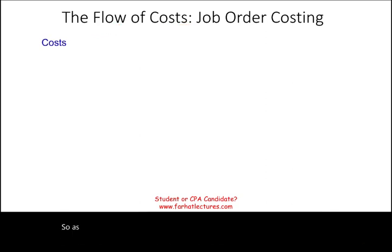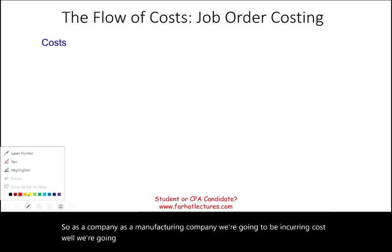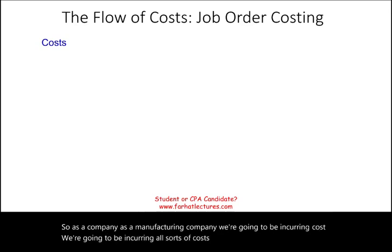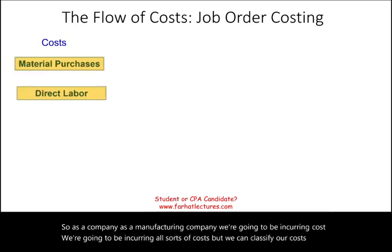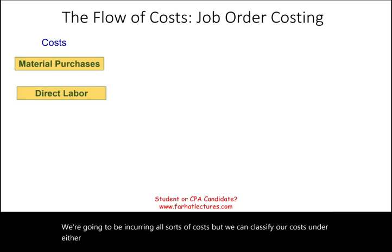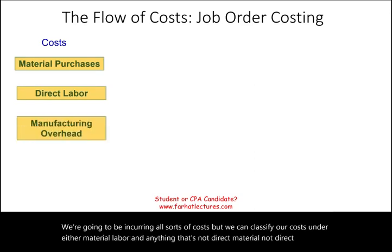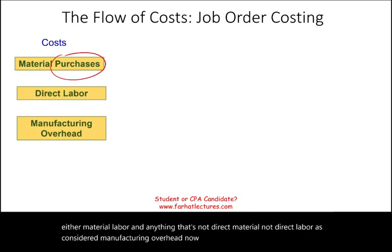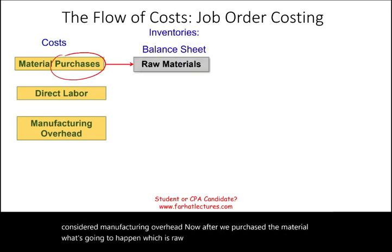As a manufacturing company, we're going to be incurring all sorts of costs, but we can classify our costs under either material, labor, and anything that's not direct material and not direct labor is considered manufacturing overhead. After we purchase the material — which is raw material — the raw material is considered inventory.